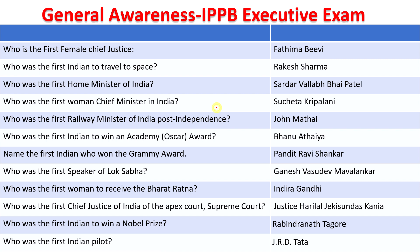Firsts of India: First female Chief Justice — Fatima Beevi. First Indian to travel to space — Rakesh Sharma. First Home Minister — Sardar Vallabhbhai Patel. First Chief Minister — Sucheta Kripalani. First Railway Minister post-independence — John Mathai. First Indian to win Oscar — Bhanu Athaiya. First Indian to win Grammy — Pandit Ravi Shankar. First Speaker of Lok Sabha — Ganesh Vasudev Mavalankar. First woman to receive Bharat Ratna — Indira Gandhi. First Chief Justice of Supreme Court — Justice Harilal Jekisundas Kania. First Indian to win Nobel Prize — Rabindranath Tagore. First Indian pilot — J.R.D. Tata.